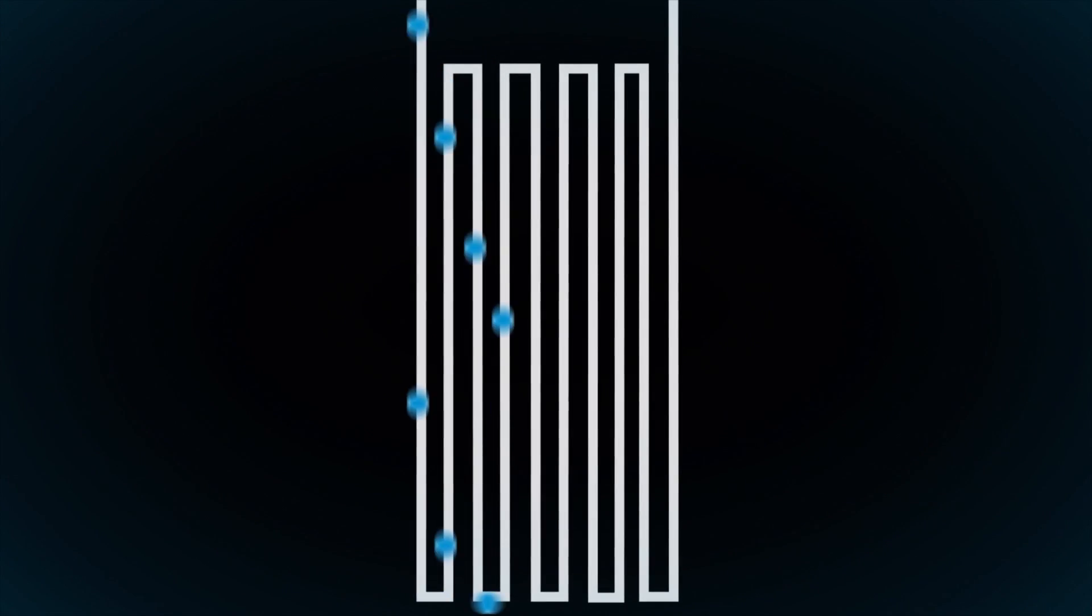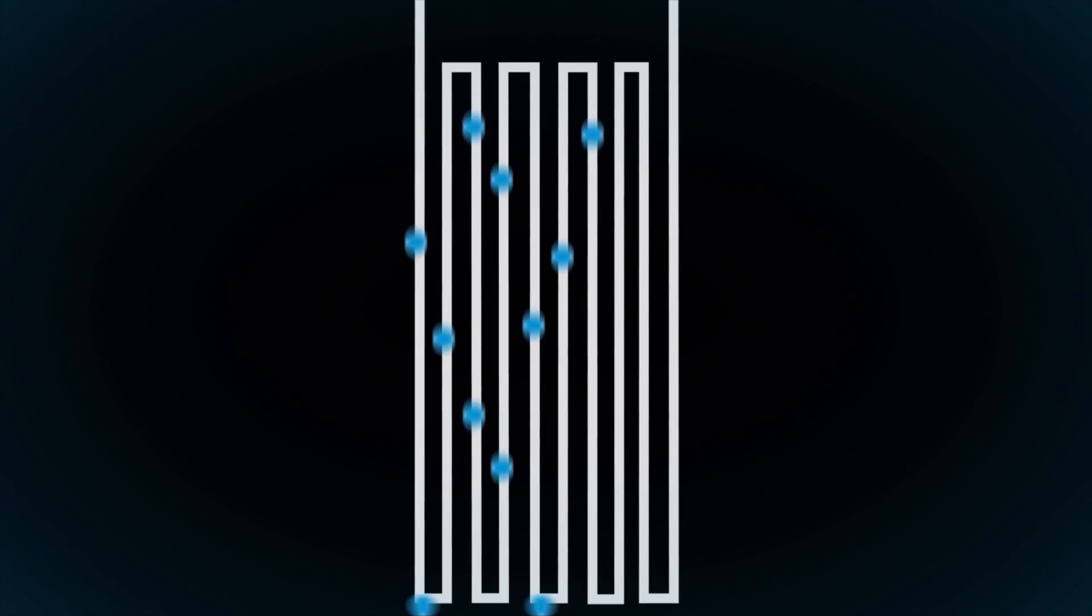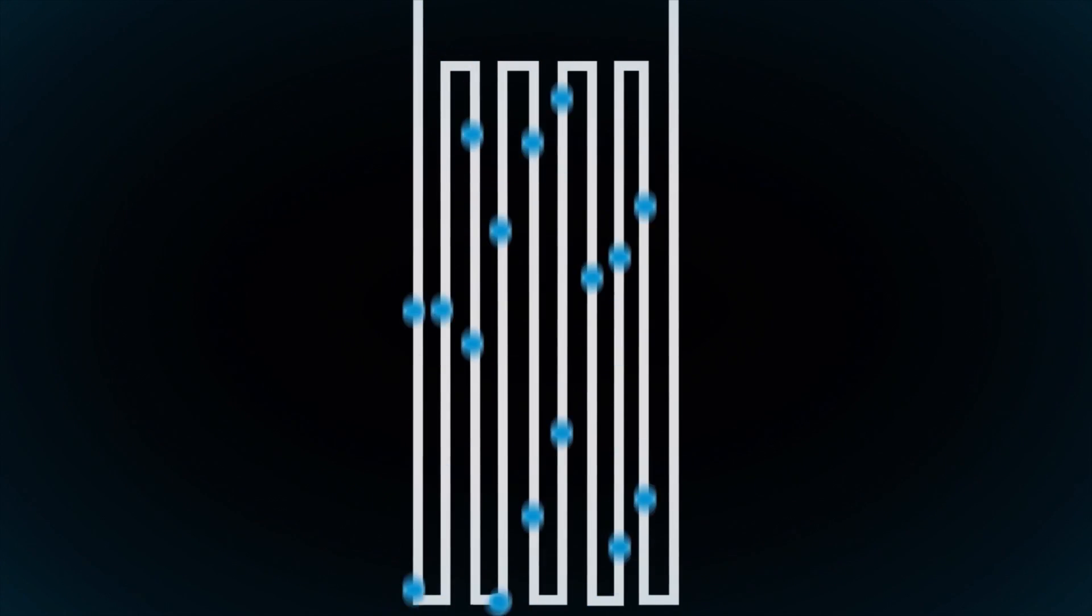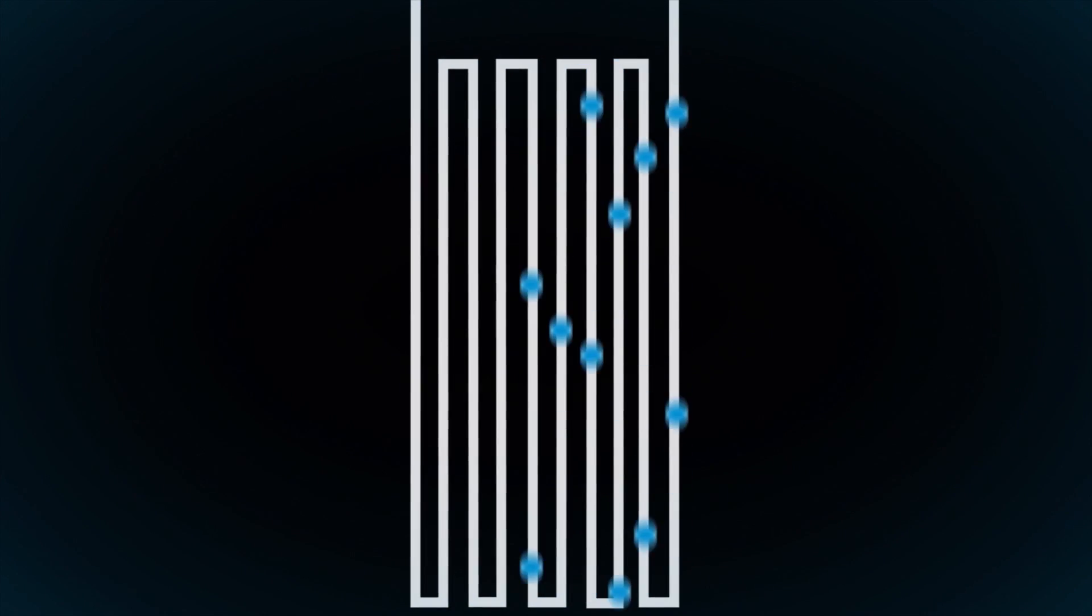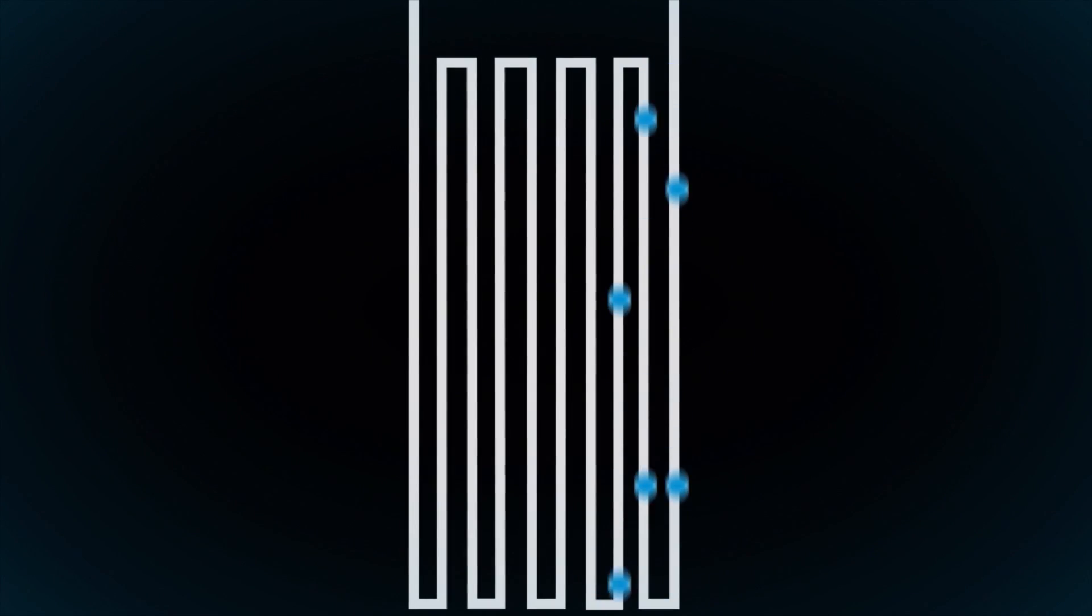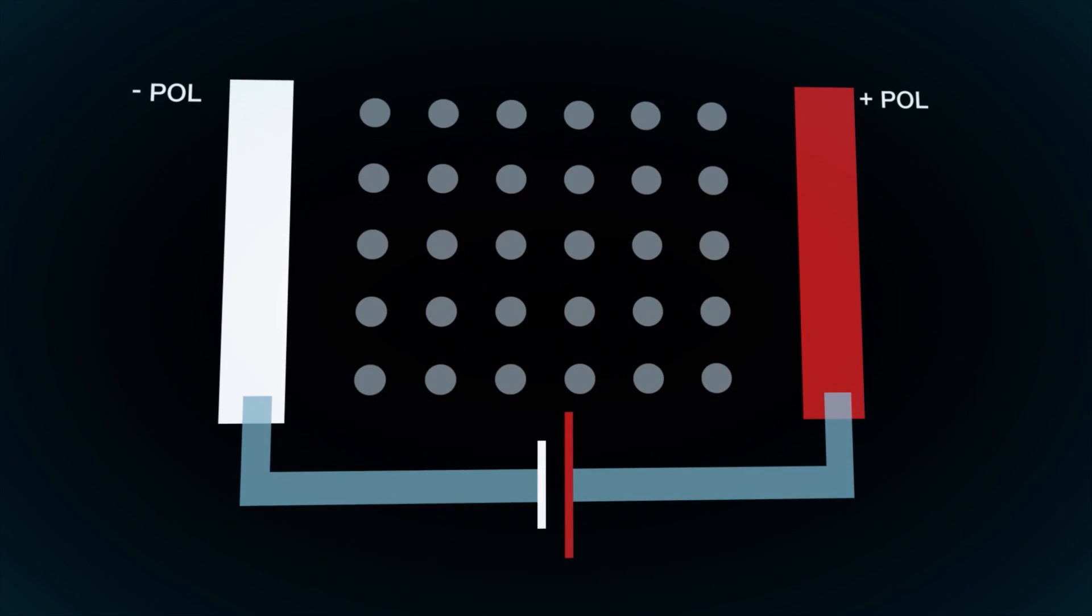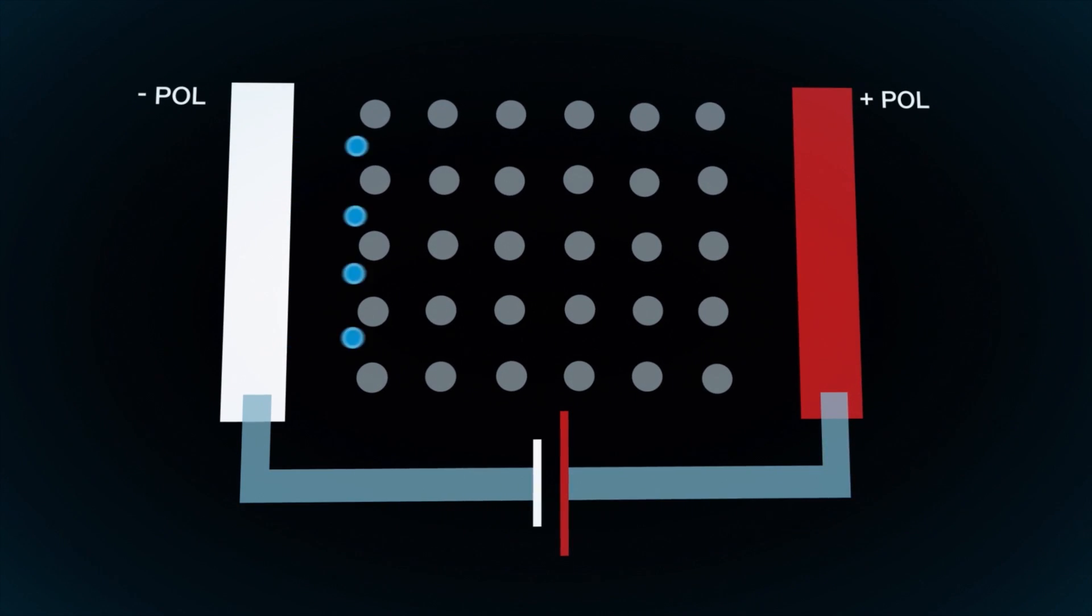When a voltage is applied during operation, current flows through this electrical resistor. This means that electric charges in the form of electrons move through the atomic lattice structures of the platinum. The schematic diagram shows the flow of electrons through the atomic lattice of the platinum conductor.